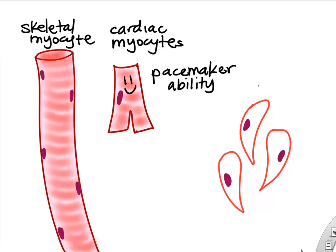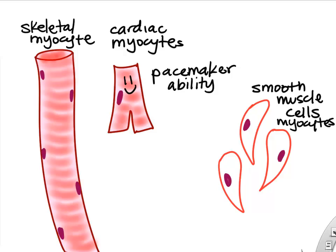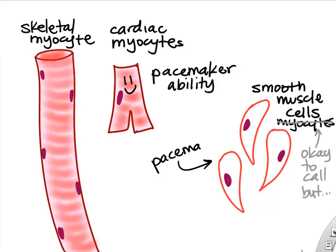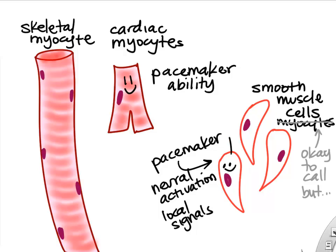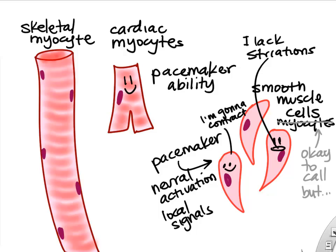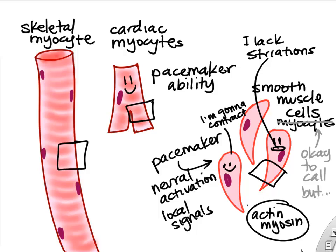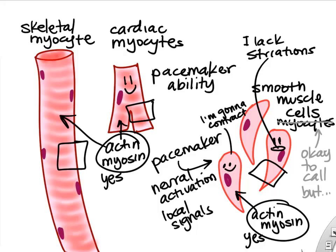Smooth muscle cells are similar to cardiac muscle in that they have some independent pacemaker ability and can contract on their own. We usually just call them smooth muscle cells, though smooth muscle myocytes is also fine. They respond to local signals and don't have striations, even though they do have actin and myosin — the actin and myosin are not arranged the same way as in cardiac and skeletal muscle.